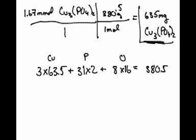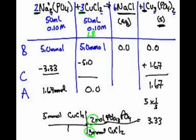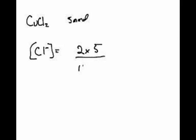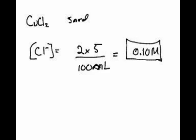Now we want to find the concentrations of all the ions. Let's start with the copper chloride. Which one was used up — the copper or the chloride? The copper got used up because the chloride is still dissolved, and there are 2 chlorides. So the concentration of Cl⁻ will be equal to 2 times 5 over our total volume of 100 milliliters — 50 milliliters plus 50 milliliters. That's 0.10 molar.